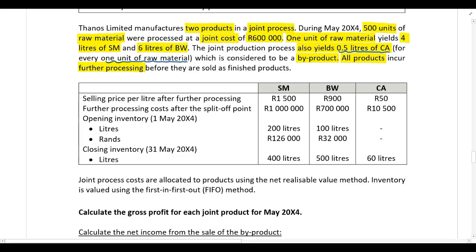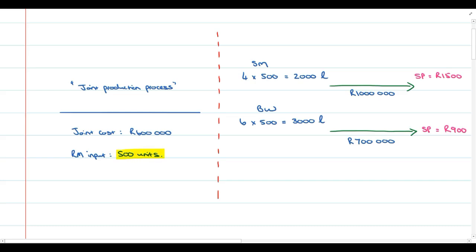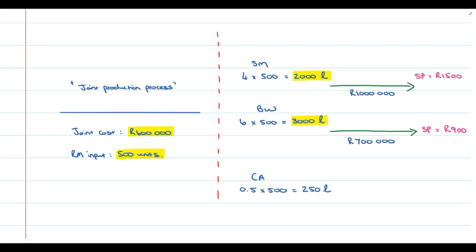Let's input all of this information onto our diagram. We know 500 units of raw material were processed at a joint cost of 600,000 Rand. One unit yields 4 liters of SM, so 2,000 liters of SM were produced. One unit also yields 6 liters of BW, so 3,000 liters of BW were produced. The joint process also yields 0.5 liters of CA per unit, so 250 liters of CA were produced, and CA is considered to be a byproduct.